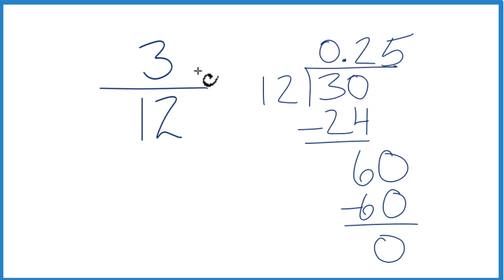We could have also started by simplifying the fraction 3 twelfths. 3 goes into itself one time and 3 goes into 12 four times. And if you divide 1 by 4, you end up with 0.25. Same thing.